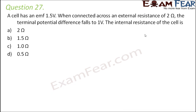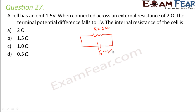Question number 27: a cell has an EMF of 1.5 volts. When connected across an external resistance of 2 ohms, the terminal potential difference falls to 1 volt. The internal resistance of the cell is to be found. The cell has EMF E equal to 1.5 volts. The moment it is connected to the external resistance, current starts to flow, and when current flows there is voltage drop across the resistances. Therefore the EMF value drops down.